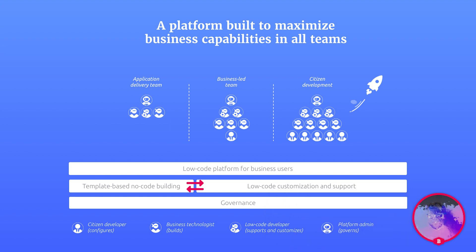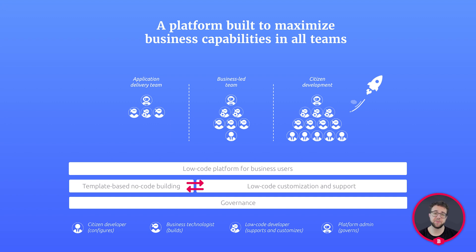As a citizen development platform, the low-code part is just a tiny part of it. You can use the platform fully no-code, you can use code — it doesn't matter what you need, we can support it. This is what the red arrows mean between low-code and no-code: use it the way you like it.